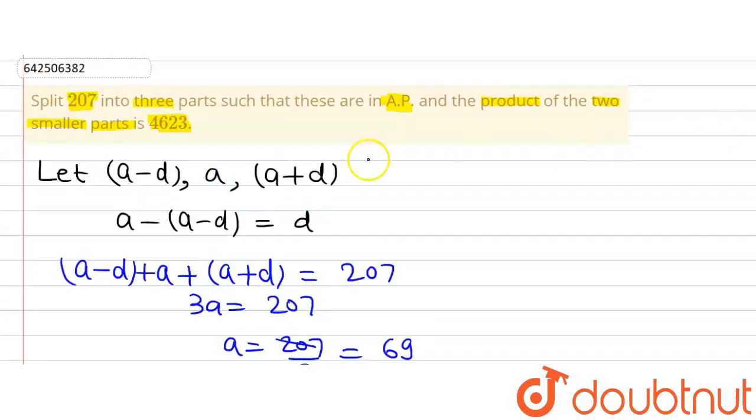Now, we need D to find out these three terms. So to find out D, we are going to follow the question which further says that the product of two smaller parts is 4623. As the common difference is D and D is getting added, that means this third term is the greatest term, then this is smaller one and this is the smallest one.